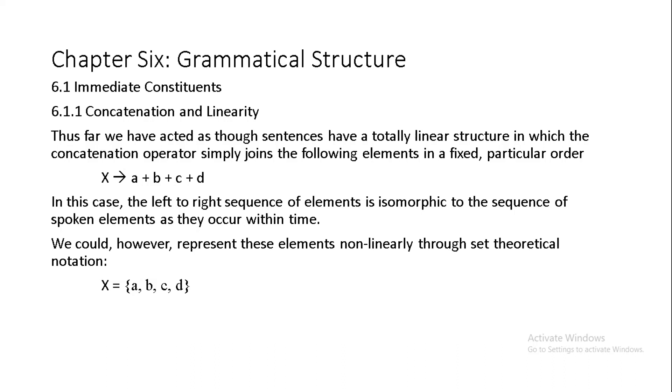Thus far we have deliberately acted as though all sentences had a totally linear structure as a string of constituents which could more or less be represented by the generic formula A plus B plus C plus D. In this case we understand the plus sign to be a concatenation operator which joins various elements together but does so in a fixed and particular order. In the case of natural languages we understand the meaning of the sequence to be its isomorphism to the sequence of spoken utterances as they unfold within time but now mapped within the movement from the left hand side to the right hand side of the string.